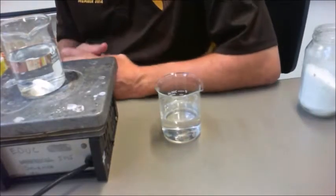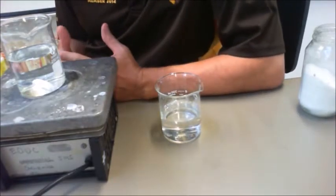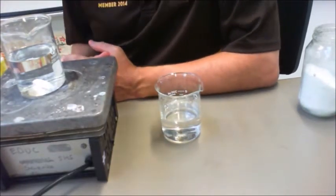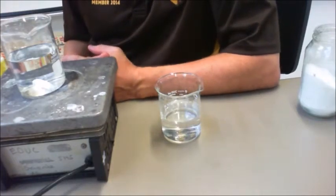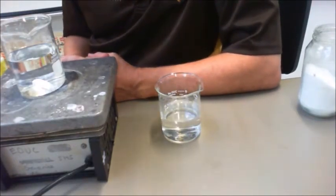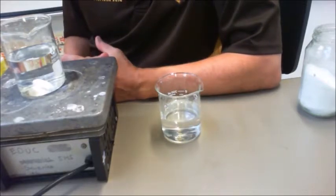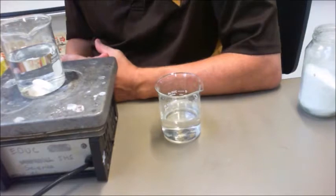Welcome to the practical today, which is looking at the effect of stirring or agitation on the rate of a chemical reaction. Once again, as we did with temperature, we're using the physical change of dissolving sugar into water as an example, because they both work in pretty much the same way.